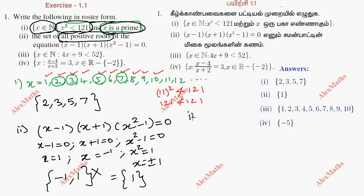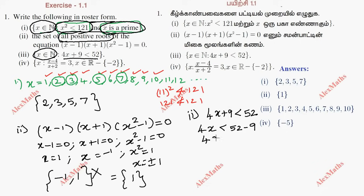Subdivision 3: x belongs to natural numbers, with condition 4x plus 9 less than 52. So 4x is less than 52 minus 9, which gives 4x less than 43. Therefore x is less than 43 divided by 4.